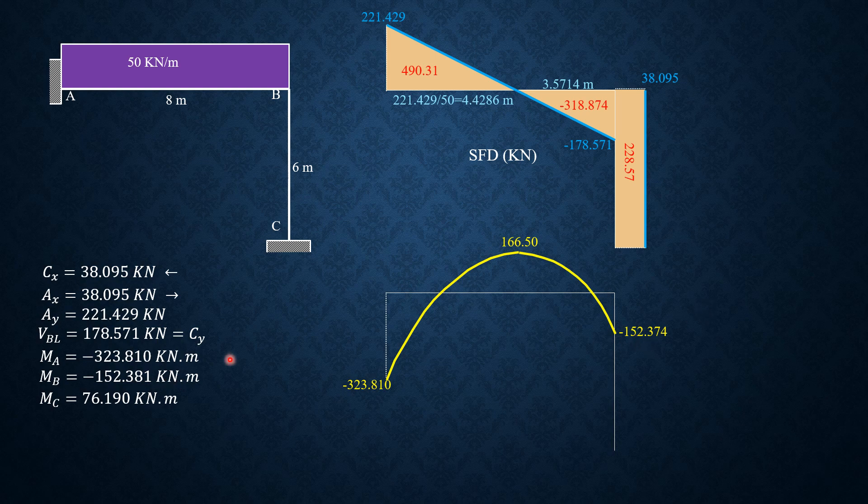Then negative 152.381, or 152.374, plus 228.57. So we have here 76.196. So this is 76.19. That's fine. So that's the bending moment diagram in kilonewton-meters.